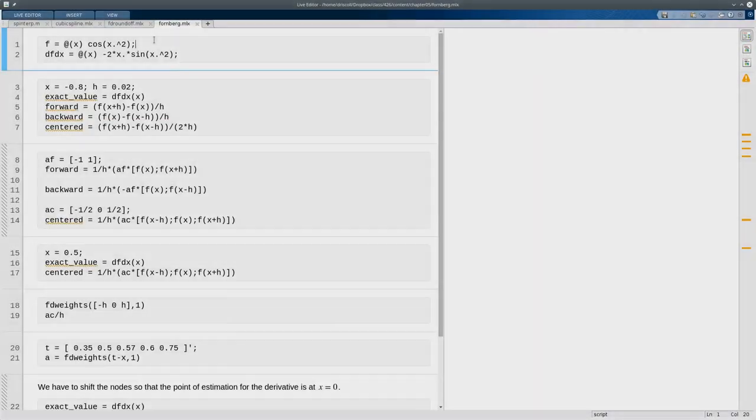Here I'm going to show some finite difference formulas in action. I've defined a function f, and I've defined its exact derivative as well so that we can compare our answers to the truth. So here I'll take one value of x and h, and compute the exact value of the derivative, and then for comparison I have the forward difference, backward difference, and the centered difference, all evaluating estimates of f prime at x.